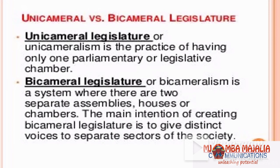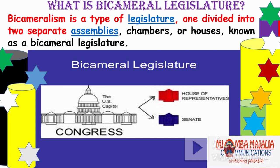A bicameral legislature is a system where there are two separate assemblies, houses, or chambers. Unicameral is the practice of having only one parliamentary or legislative chamber. Both systems have their pros and cons — nothing is perfect. Even in the United States they have the House of Representatives and the Senate — that's how Congress works. Kenya is not dealing in a vacuum; we compare with the world.